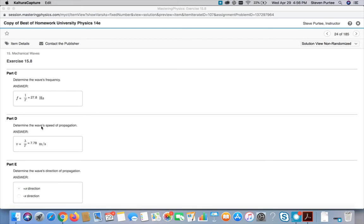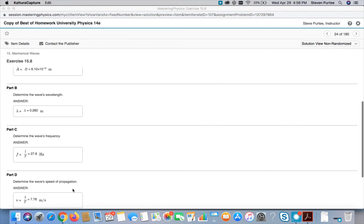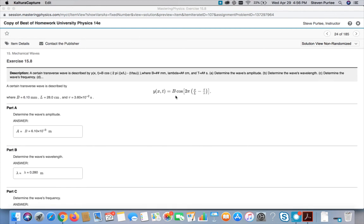The wave speed is lambda f or lambda divided by t. So we just divide those two numbers. 7.78 meters per second. And this wave is traveling in the positive x direction because we're in standard form of a wave here.